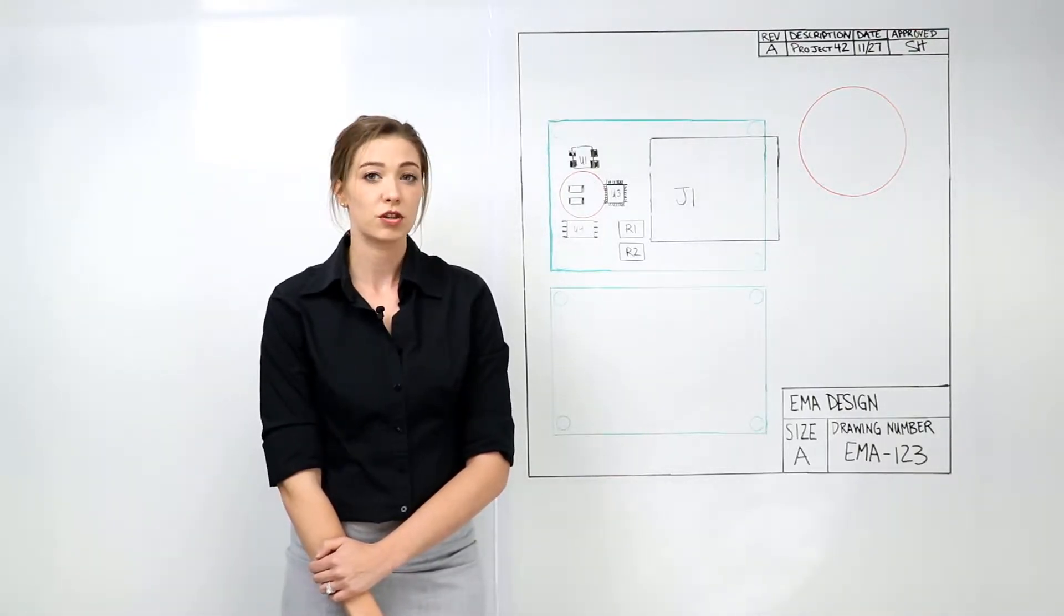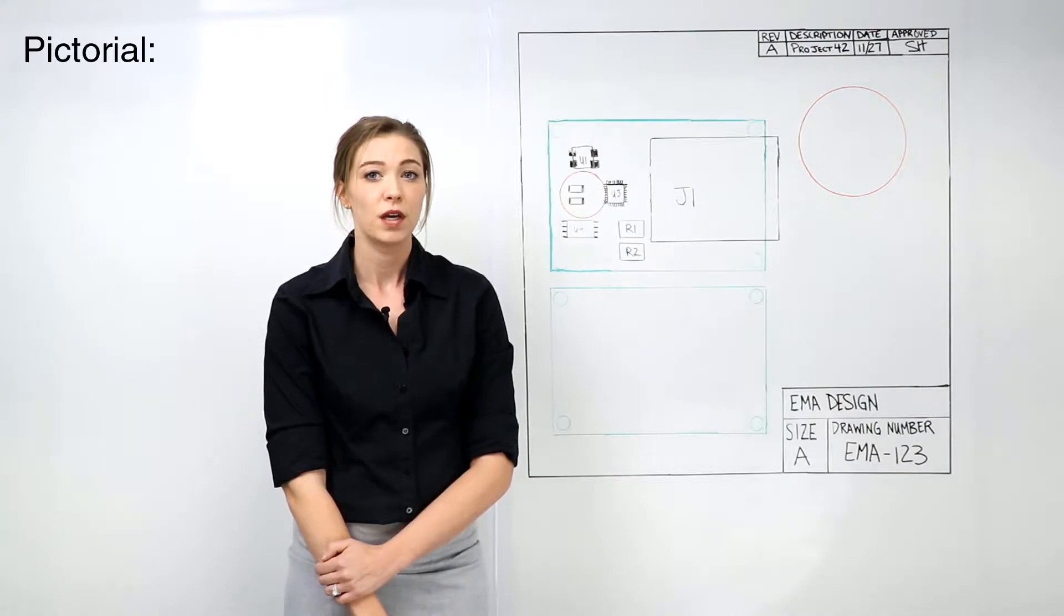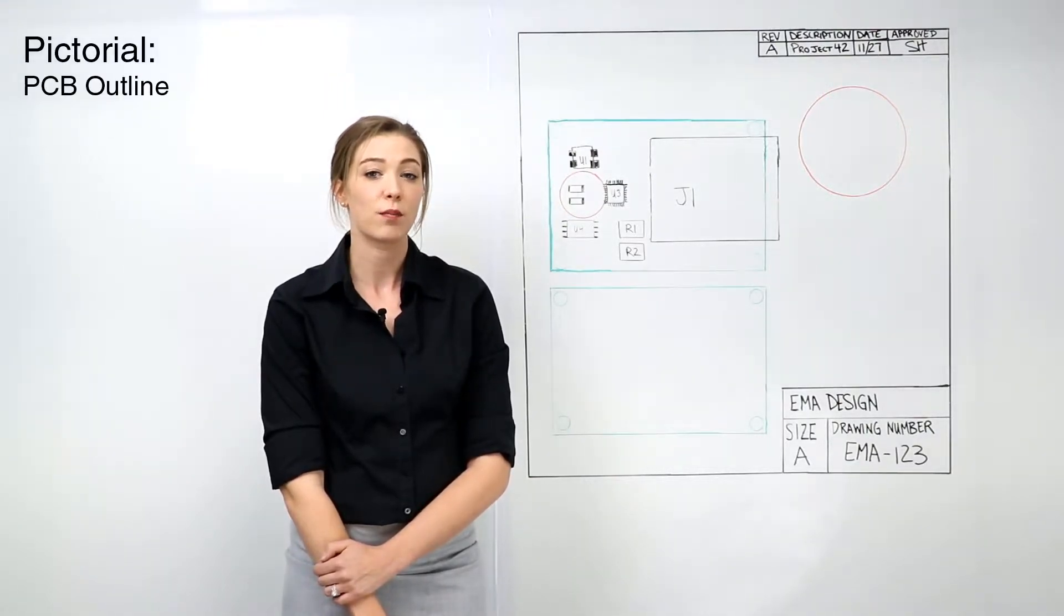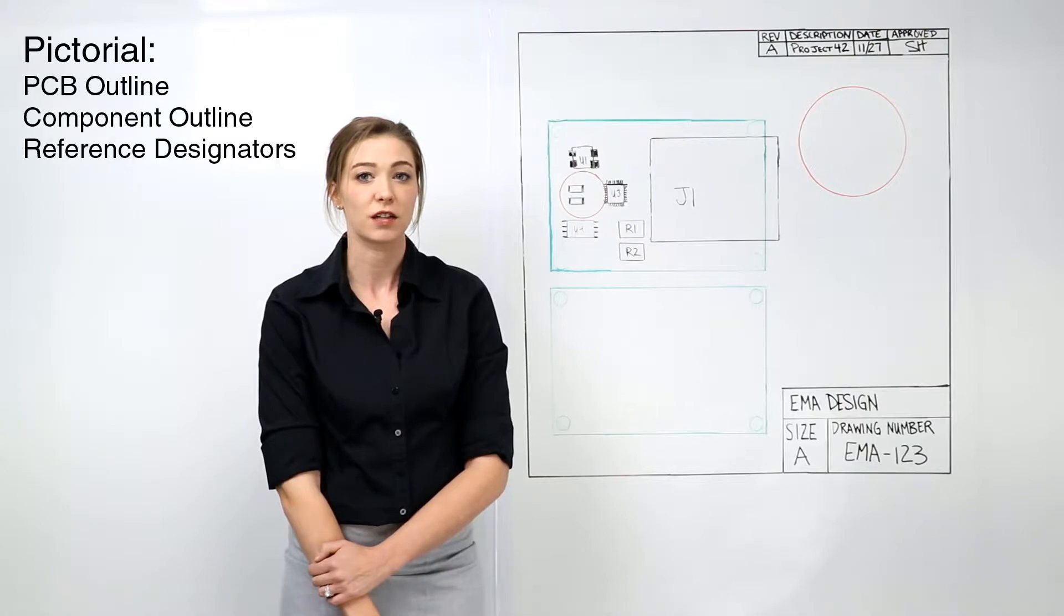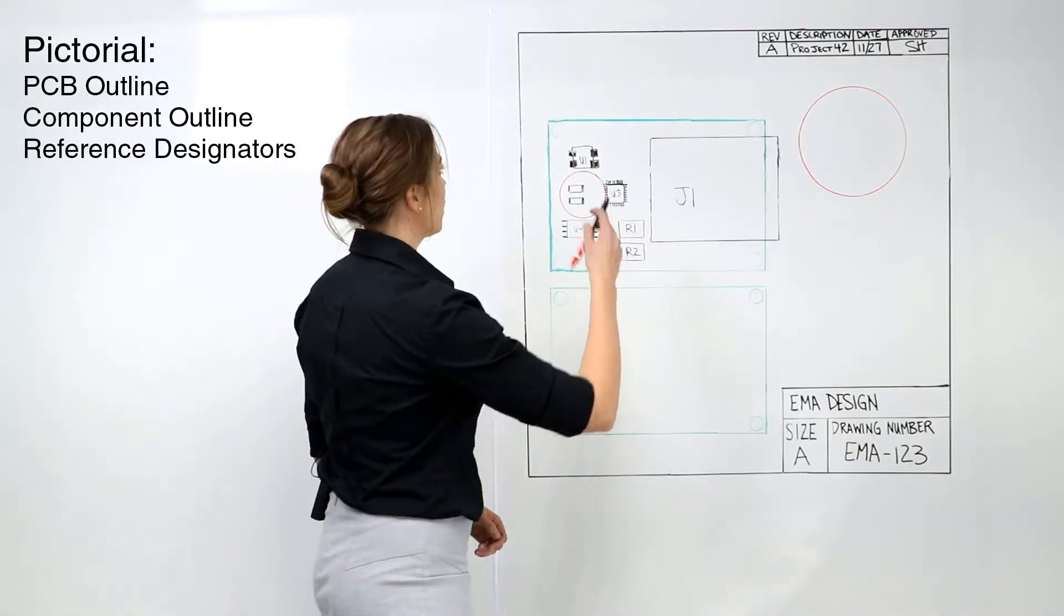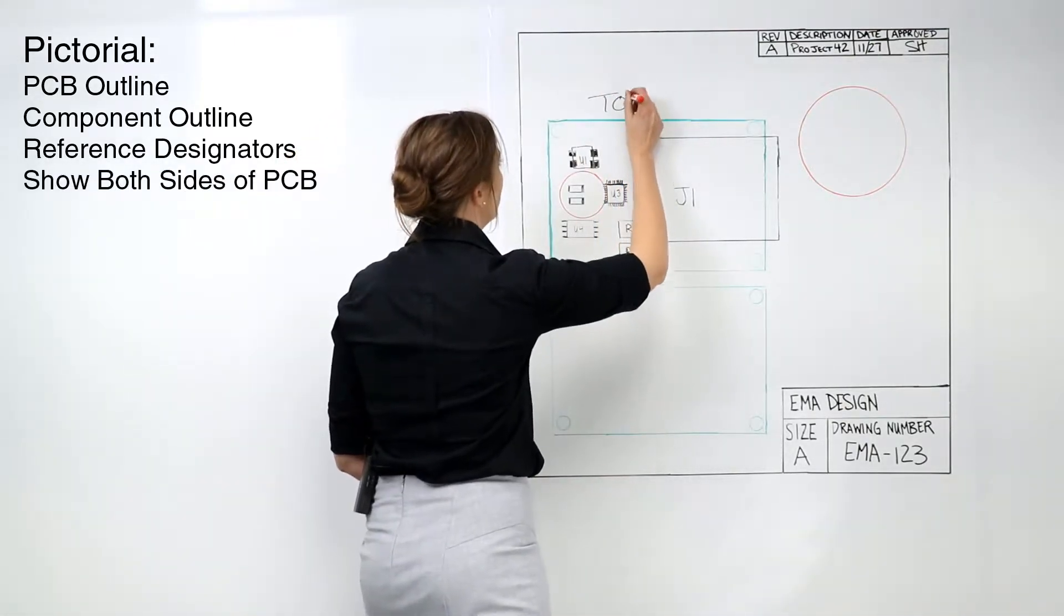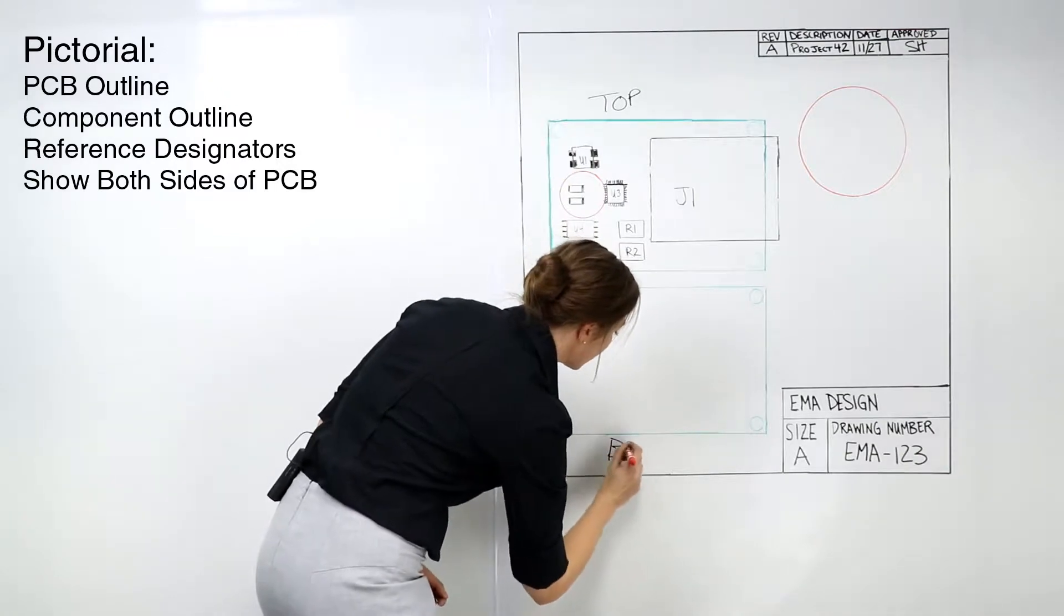All assembly drawings should contain a pictorial. The pictorial should include the PCB outline as well as the component outlines and reference designators. Pictorials should be included for the top and bottom of the assembly.